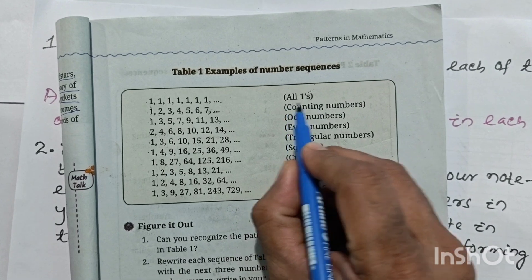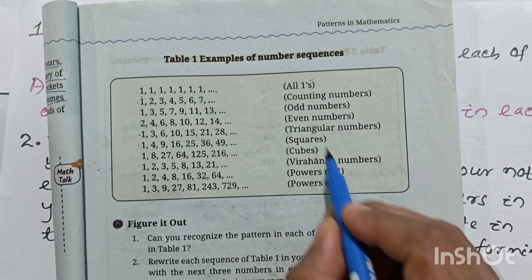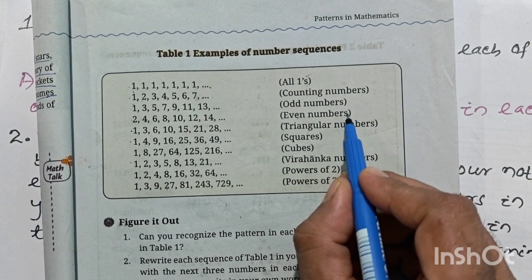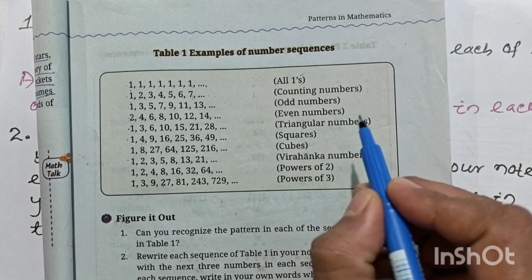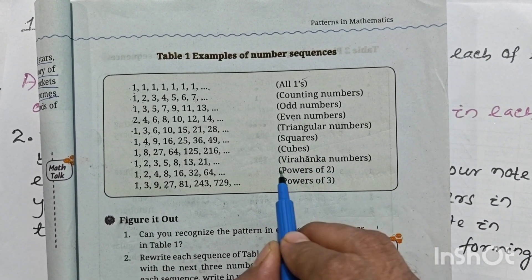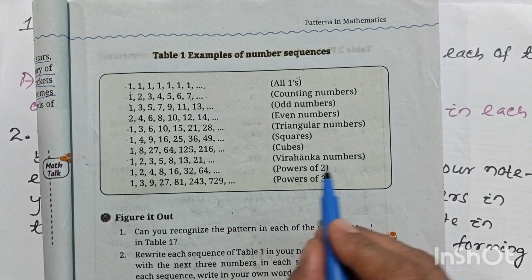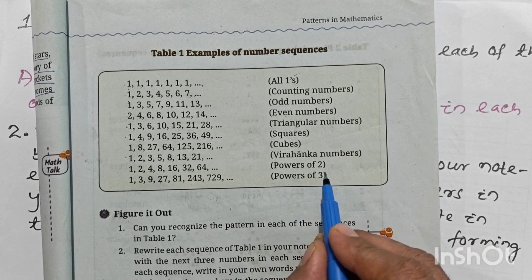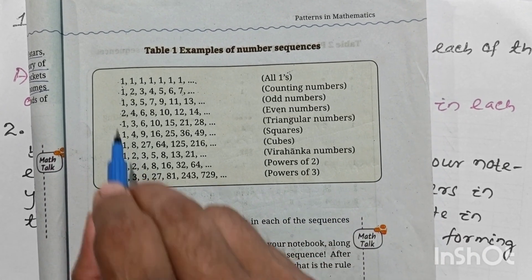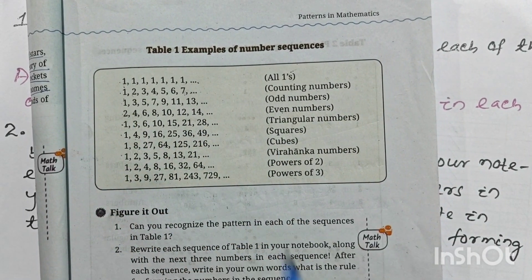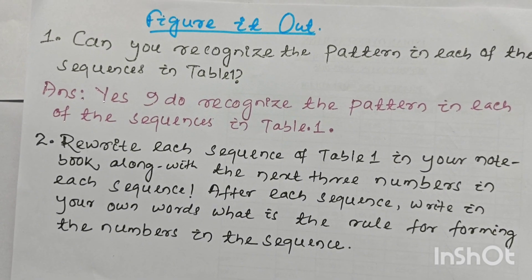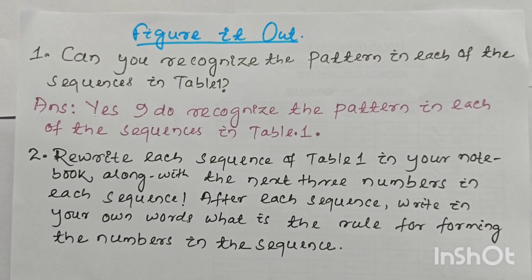The sequences are: all 1s, counting numbers, odd numbers, even numbers, triangular numbers, sequences of squares, cubes, Virahanka numbers, powers of 2, and powers of 3. These are all the number sequences which were already discussed in my previous video.